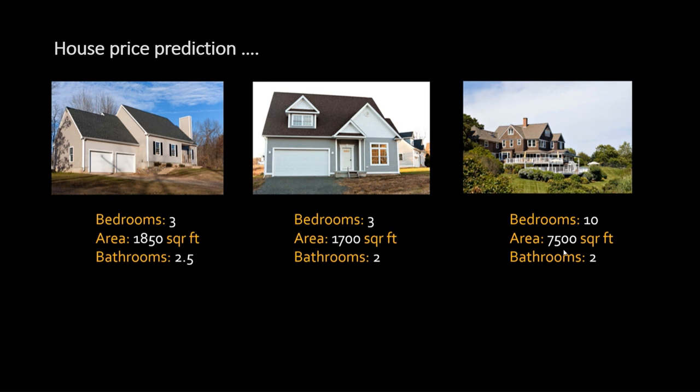Now I'm giving one more image — one more home with these properties: 10 bedrooms, 7,500 square feet area, and 2 bathrooms. By comparing the values of these attributes, it is very clear that this third image is too distinct from the first two. The first two are small houses and this is a mansion, with very different values in terms of bedrooms, area, and bathrooms compared to the first two.